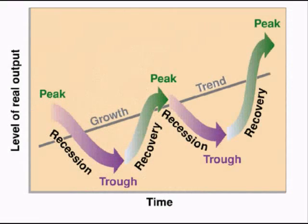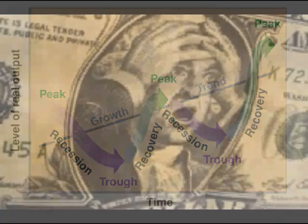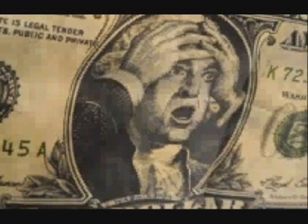Keynes theorized that the government could minimize the extreme highs and lows of the business cycle by influencing the level of total spending in an economy. If spending is too high, to try and minimize inflation, the government will try and reduce total spending. It will do this by reducing its own spending, as well as raising taxes, which leaves less money for consumers to spend.